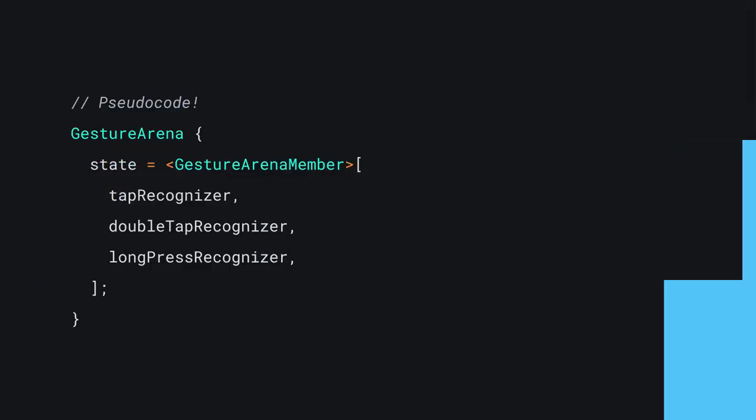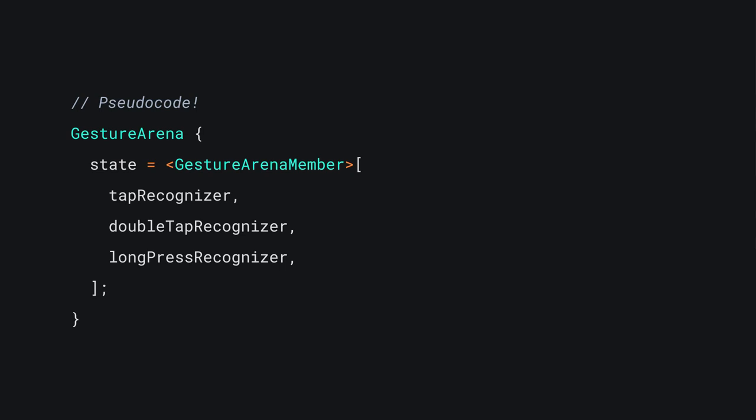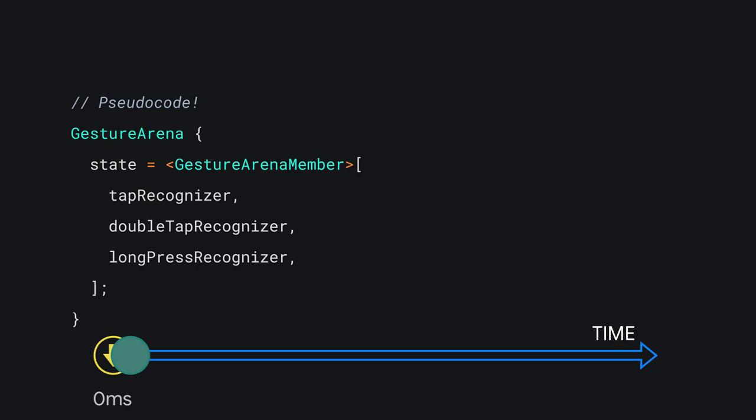Of course, there are recognizers for all the other gestures as well — pan, scale, force press, horizontal drag, and vertical drag — and they all have their own algorithms. To wrap this up, let's consider a few scenarios and think about how it will all play out in the arena. First, imagine that loaded-up gesture detector with all of its recognizers in the arena after one pointer down event, which we'll say happened at time zero.